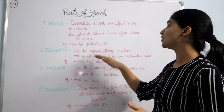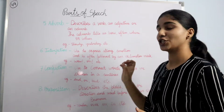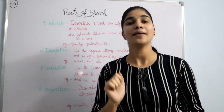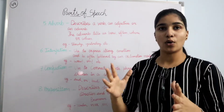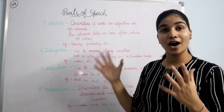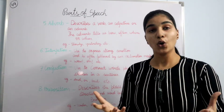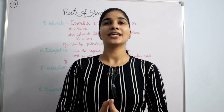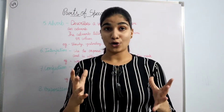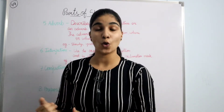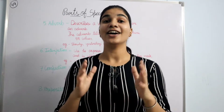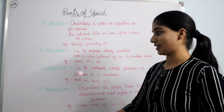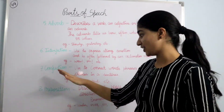Next we have interjection. Interjection is used to express strong emotion and is often followed by an exclamatory mark. Like wow, oh, etc. Like in a sentence: Wow, the view outside the window is amazing. Here 'wow' is an interjection.